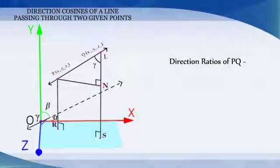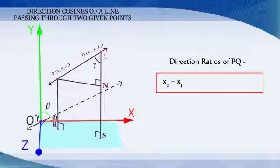The direction ratios of the line segment joining P(x1, y1, z1) and Q(x2, y2, z2) may be taken as x2 minus x1, y2 minus y1, and z2 minus z1.